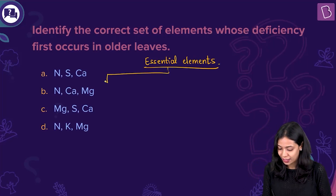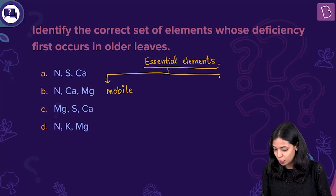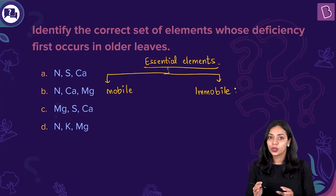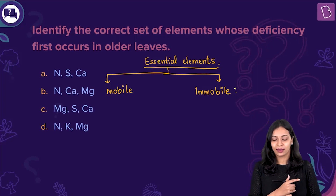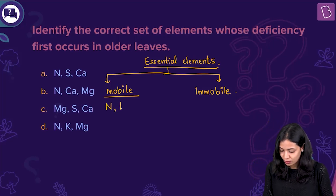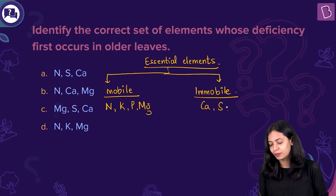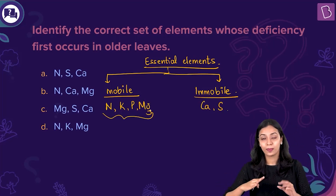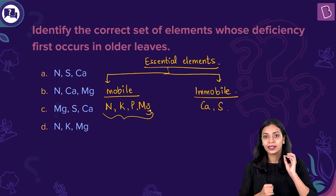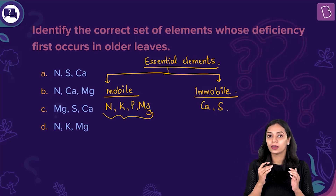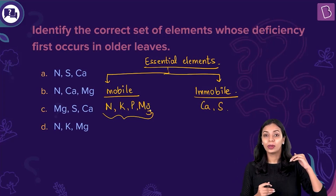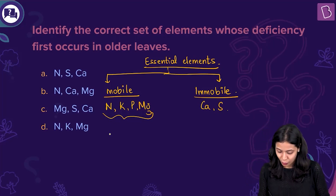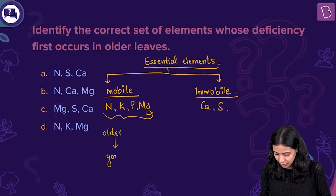Essential elements can be classified into mobile elements and immobile elements. Mobile elements are those that can easily be mobilized within the plant. Examples of mobile elements include nitrogen, potassium, phosphorus, and magnesium, while immobile elements include calcium and sulfur. If there is a deficiency of mobile elements in the soil, the elements present in older leaves of the plant will be transported or mobilized from older tissues to younger tissues.